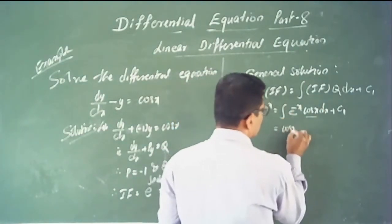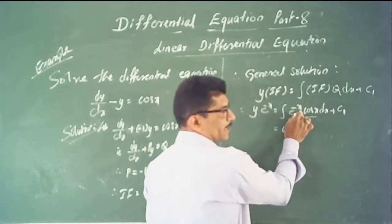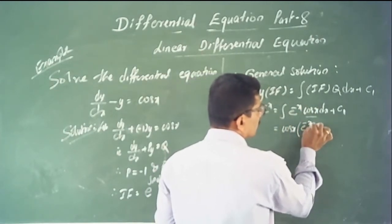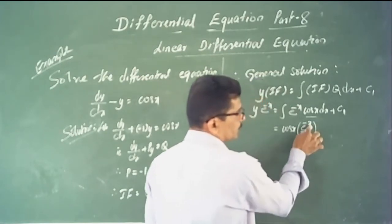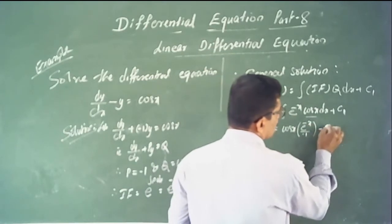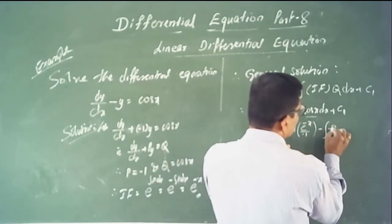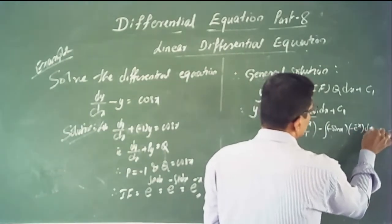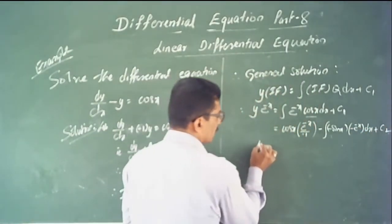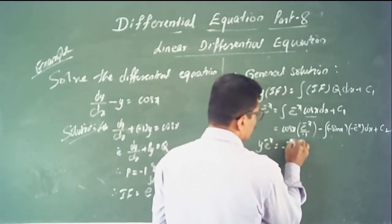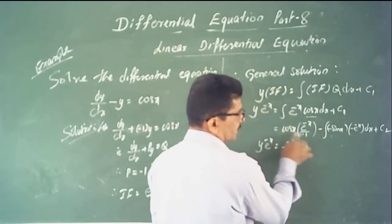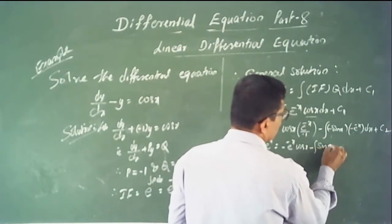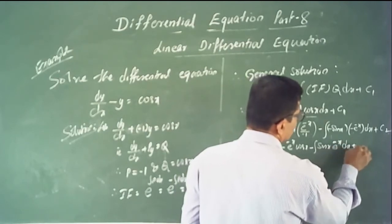Using integration by parts: the trigonometric function is the first function and the exponential is the second. First function is cos x; integration of e^(−x) is −e^(−x). So the result is: −e^(−x)·cos x − ∫(−sin x)(−e^(−x)) dx + C₂, giving −e^(−x)·cos x − ∫sin x · e^(−x) dx + C₂.